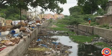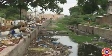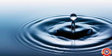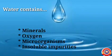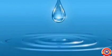Waste reaches not only the soil but also water, causing it to get polluted. The amount of pure water available to us is only a small percent of the total water on the earth. The quality of water is determined on the basis of the purpose for which it is used — the highest quality is required for drinking water. Water contains various minerals, oxygen, microorganisms, and insoluble impurities, and the variation in their levels influences the quality of water.